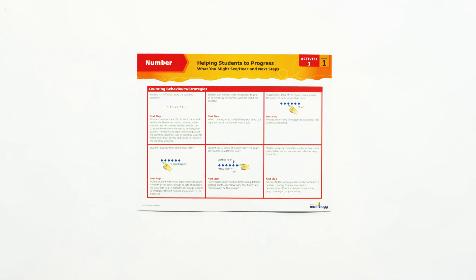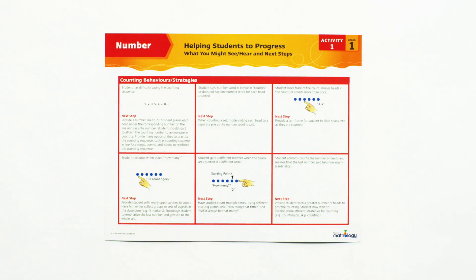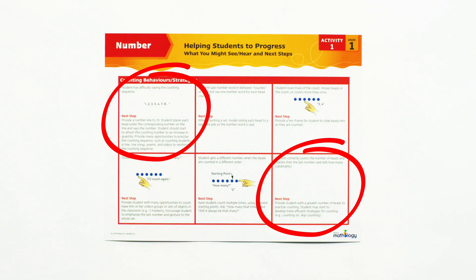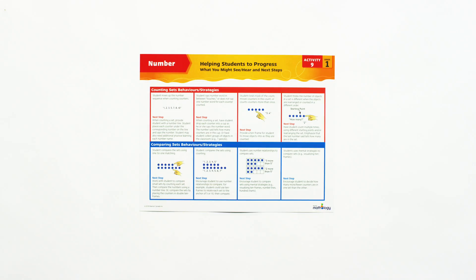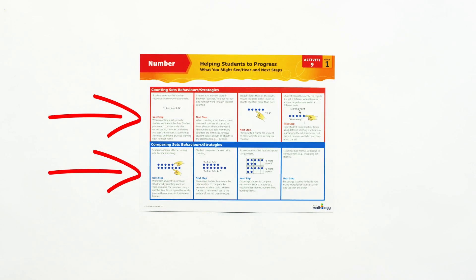Side B of each card describes, through words and illustrations, what you might see students do and say as they complete the activity. There are typically six boxes moving from earlier stages of development to grade-specific understanding found in the final box. This information can be helpful for observational assessment — you can see at a glance what a student understands and use the next steps to guide them forward. In some cases there may be four boxes, or you may come across a side B where there are two sets of boxes distinguished by different colors. Each set shows the progression of a different focus, the second being more advanced.